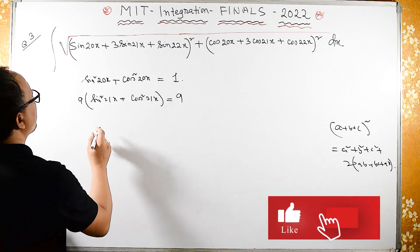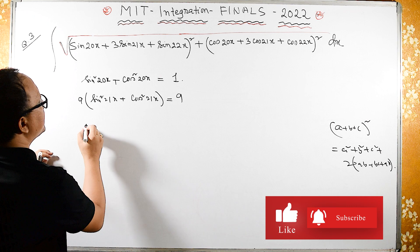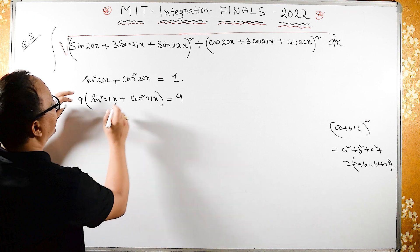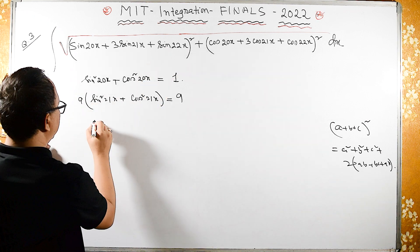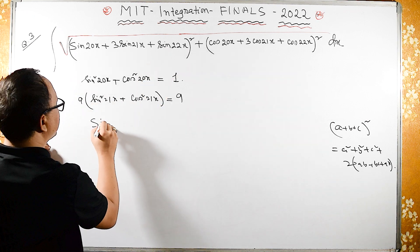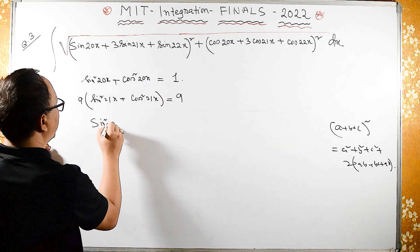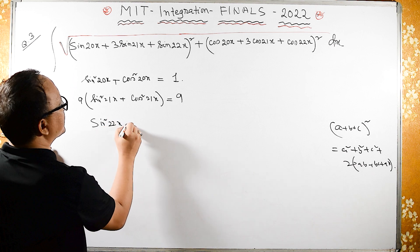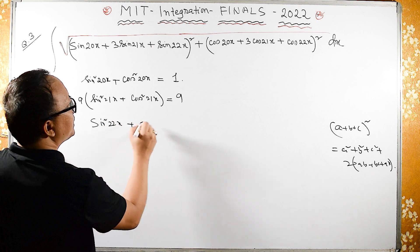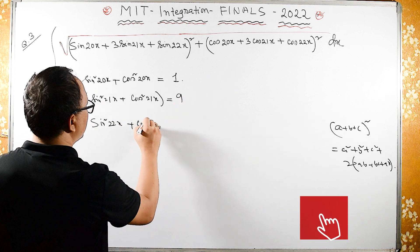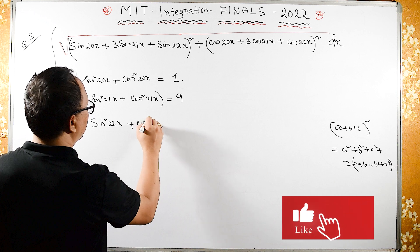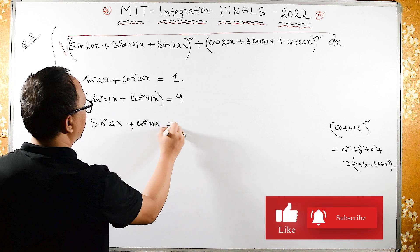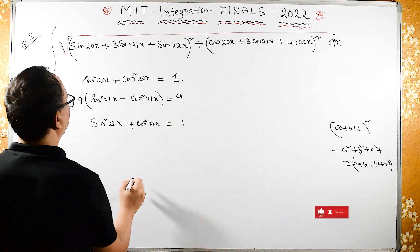Since sin²θ + cos²θ = 1, we have 9 times 1, which is 9. Similarly, the next term: sin²(22x) plus cos²(22x) also equals 1.